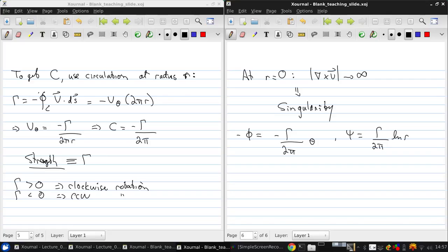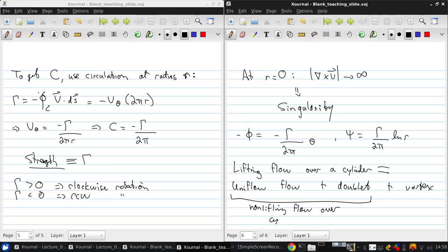Now, we finally have everything we need to consider the lifting flow over a cylinder. And we'll talk about what that means physically in a moment. But we can now say that the lifting flow over a cylinder equals a uniform flow plus a doublet plus a vortex. So this was a non-lifting flow over a cylinder, and then to that, we add the vortex.